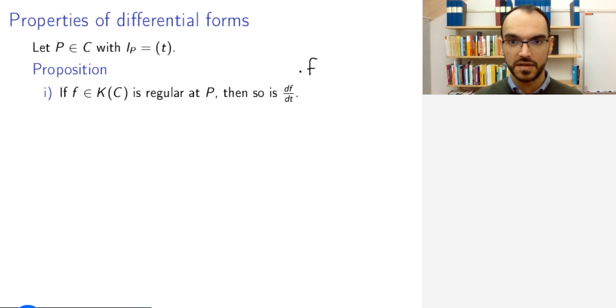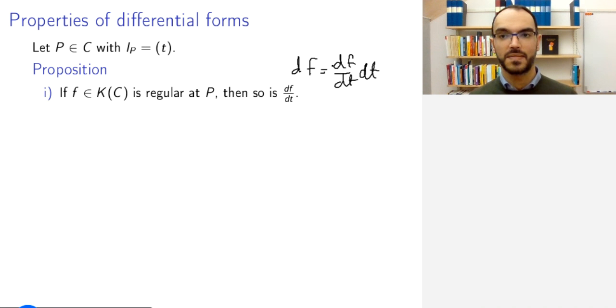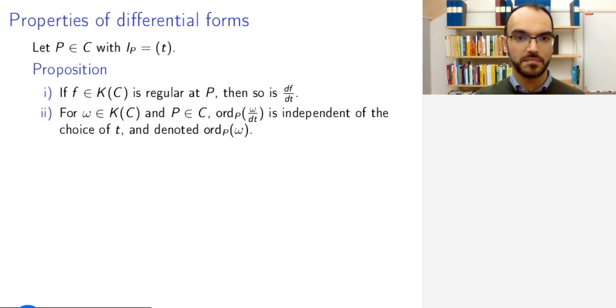Remember, f·df is (df/dt)·dt, and so this function will not have a pole either. So, this is perhaps easy to believe. I will omit the proof and rely on some elementary intuition. Next, if I take any ω, and this should not be in K_C, it should be in ω_C, the order is independent of the choice of t, and so we denote this the order of ω.